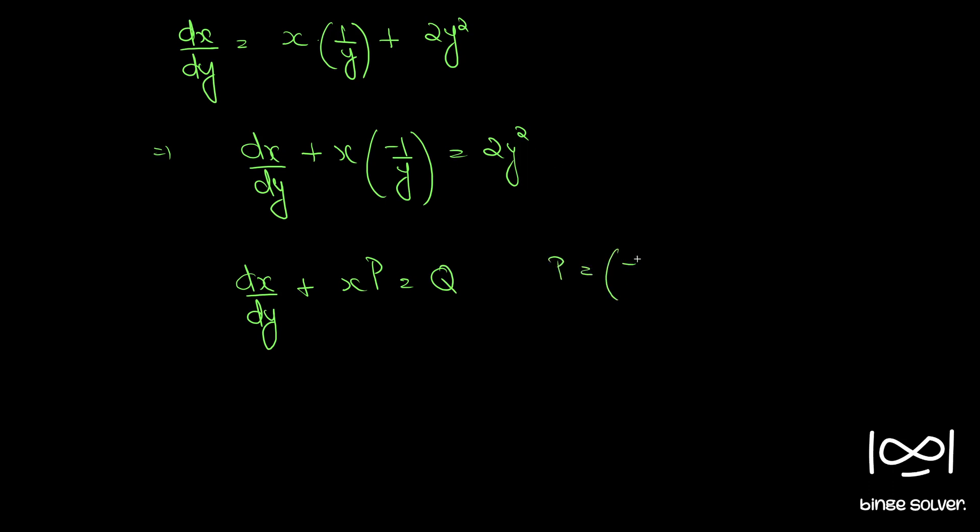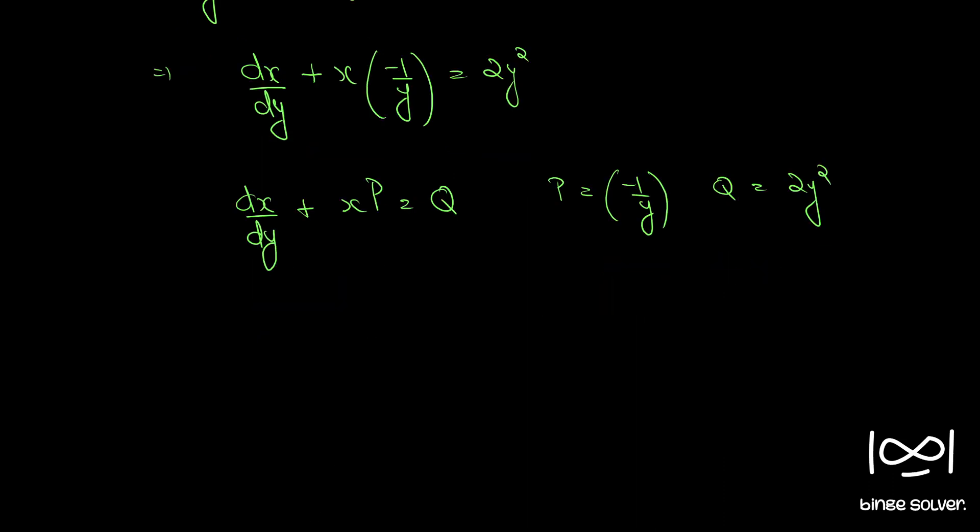Here p is minus 1 by y and q is 2y squared, so this is in the standard form.